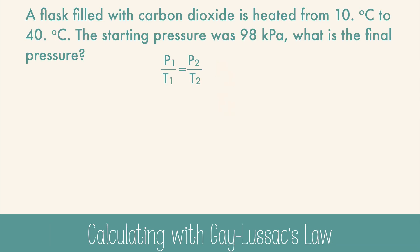A flask filled with carbon dioxide is heated from 10 degrees Celsius to 40 degrees Celsius. The starting pressure is 98 kilopascals. What is the final pressure? We're using Gay-Lussac's law, and we need to find the final pressure. So let's rearrange the equation first. Just multiply both sides by T2, and you get a nice, clean equation. Fill in the data and calculate. Ah, but be careful. Use Kelvin instead of Celsius so that the mathematical proportions are accurate. And make sure that the final temperature is on top and the initial is on the bottom. And then you'll get 108 kilopascals or, with correct sig figs, 110.